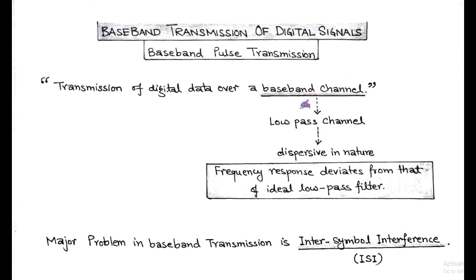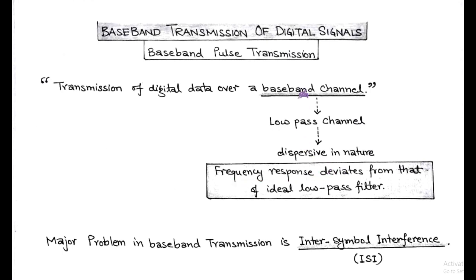This Baseband Channel is a low-pass channel and it is dispersive in nature, because the frequency response of this Baseband Channel deviates from the ideal low-pass filter, hence called dispersive in nature.